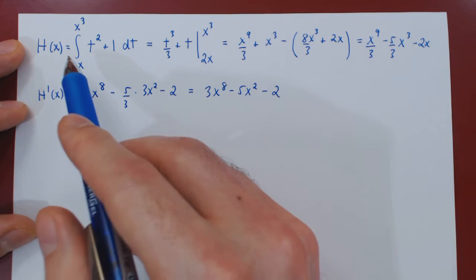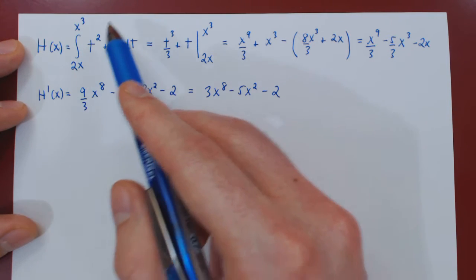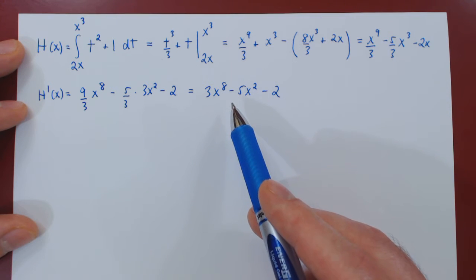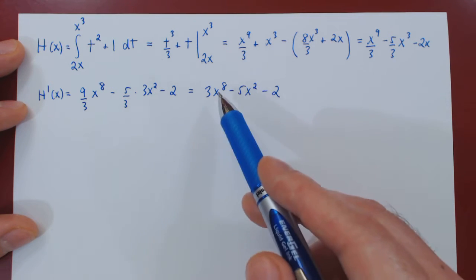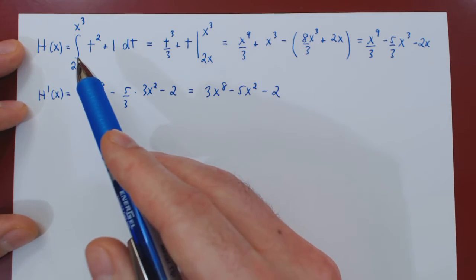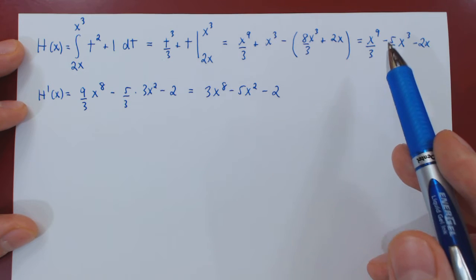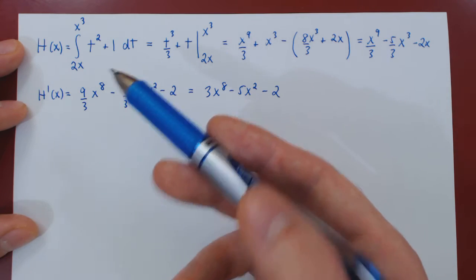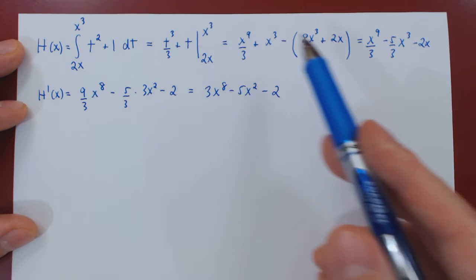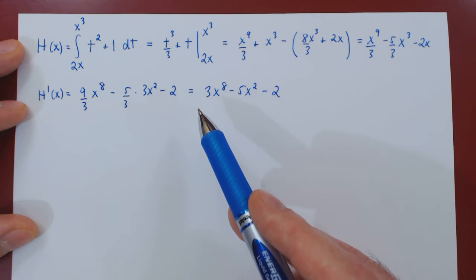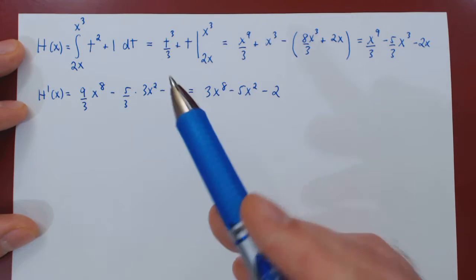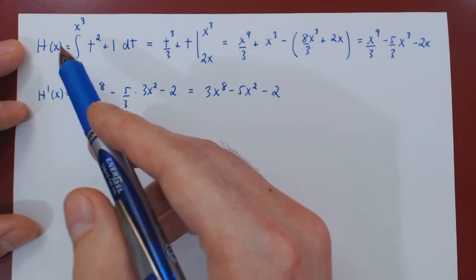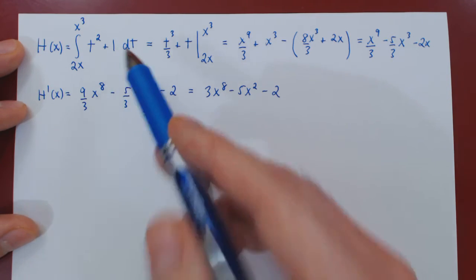Here's a question: we had a definite integral, we first evaluated it, then found the derivative. But there's something that should bother you — did we have to first integrate if our objective was to then differentiate? After all, the derivative is the inverse operation of integration. So if we first integrate then differentiate, both operations should kind of cancel each other out. Let's see if we can find a simpler solution.